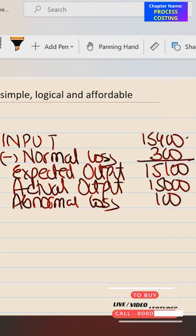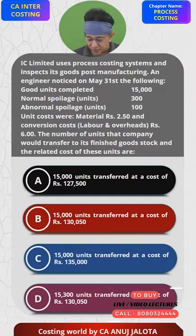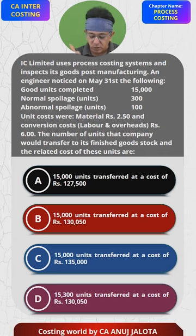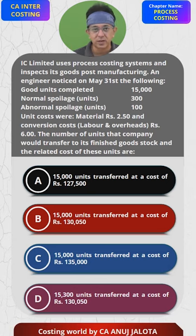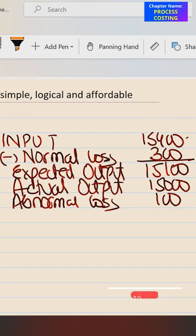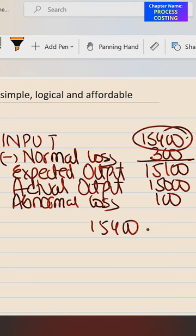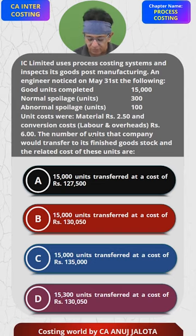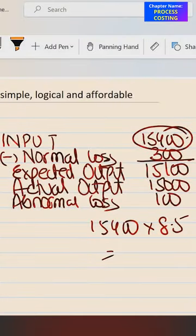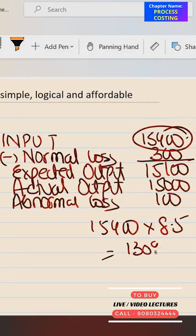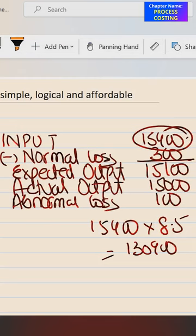Now, the cost: whenever you process, material cost was 2.5 and conversion cost was 6. All these costs would have been incurred when you input the material. So 15,400 into 8.5 (that's 2.5 plus 6). Taking my calculator: 15,400 into 8.5 equals 130,900. But this is not your answer, obviously - this is the process cost.